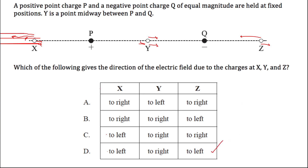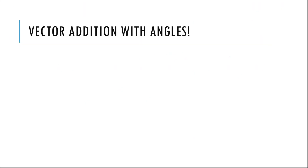The key idea is to look at each individual point, sketch the individual field vectors from each charge at that point, and then sum them up. These problems can be a little time-consuming, but you want to take the time to make those sketches and break them down bit by bit. You can't just squint and look at it — you have to work it out.